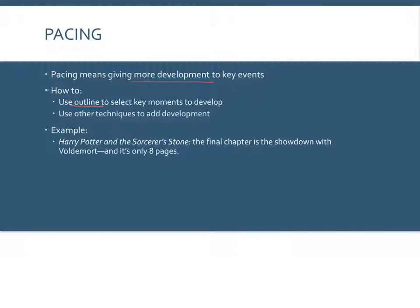Pacing is more about making decisions about what to develop — you could use dialogue, reflection, or description to do so. For example, in Harry Potter and the Sorcerer's Stone, the final chapter is the showdown with Voldemort. The entire book has been leading up to it, but that showdown is only eight pages. This tells us Voldemort was never the main focus of this particular book. Instead, the main focus was the development of relationships between Harry, Hermione, and Ron — that is what J.K. Rowling chose to emphasize.